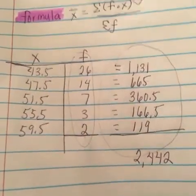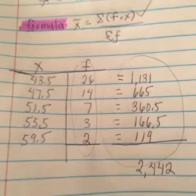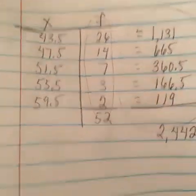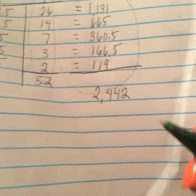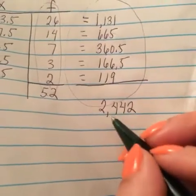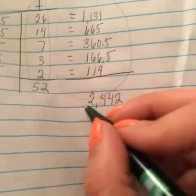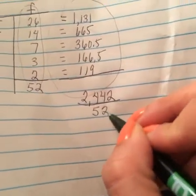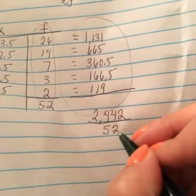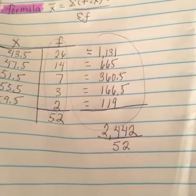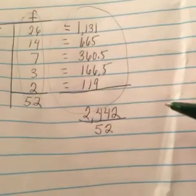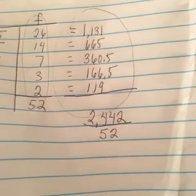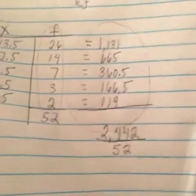We want to add all of the frequencies up. So we have 26, 14, 7, 3, and 2. When you add all of those up you get 52. So now our problem looks like this: we have 2442 divided by 52.